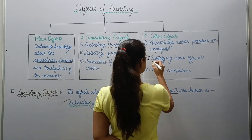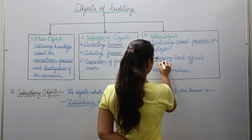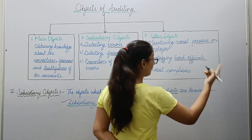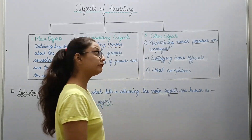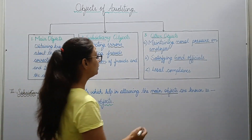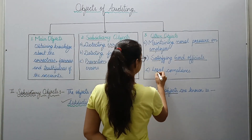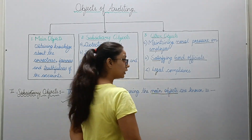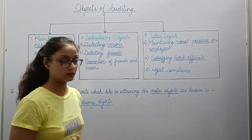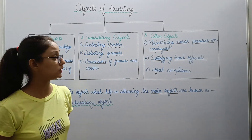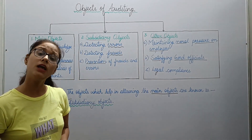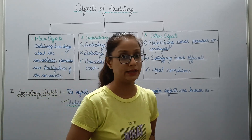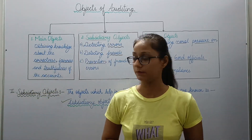Satisfying government officials — there are certain government officials and requirements which you fulfill. And then the third one is legal compliance. By law also there are some compulsions that you have to get your firm audited. So for all these reasons you have a requirement to conduct auditing.